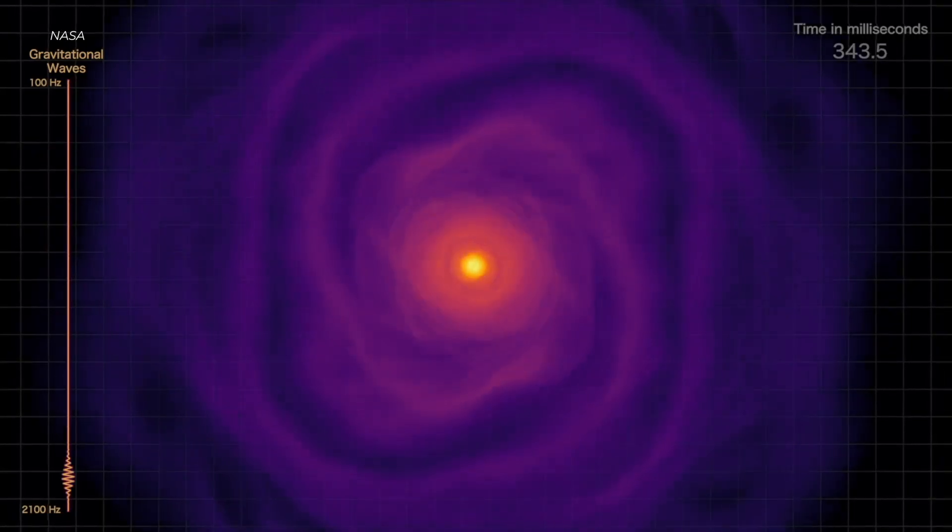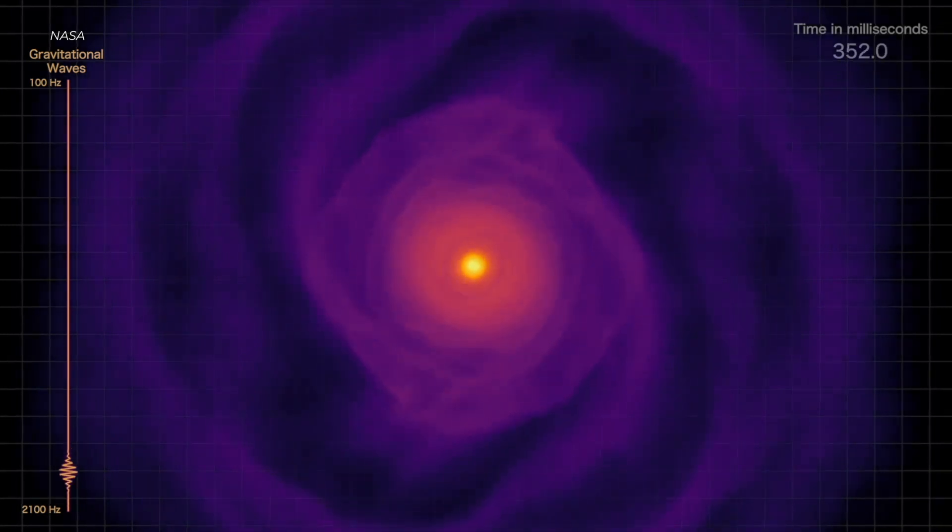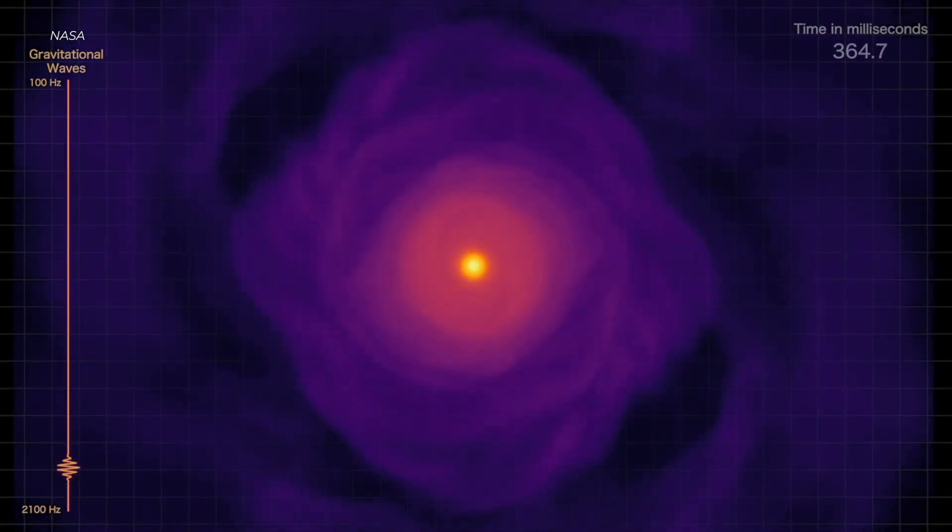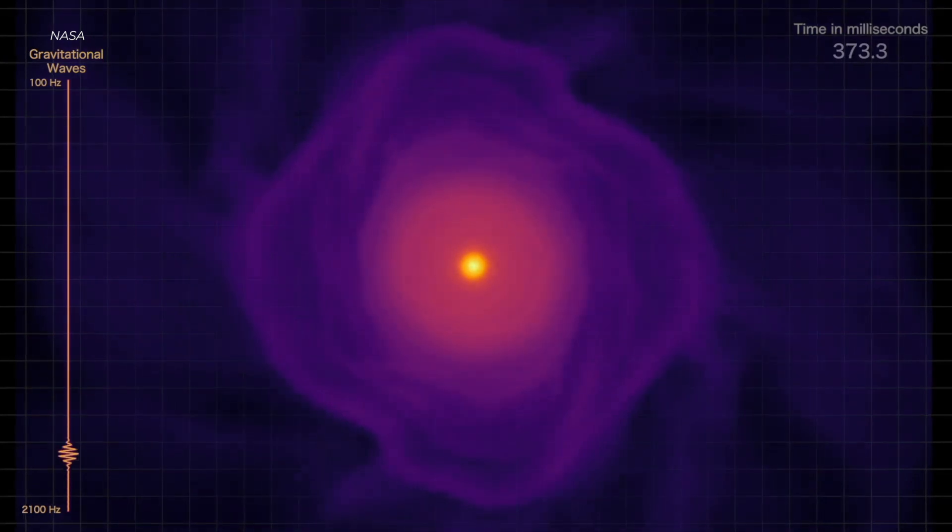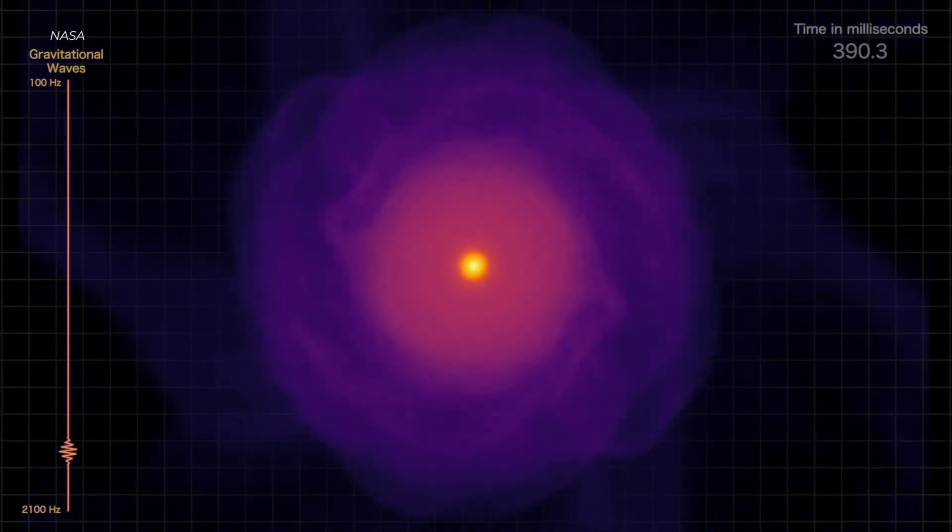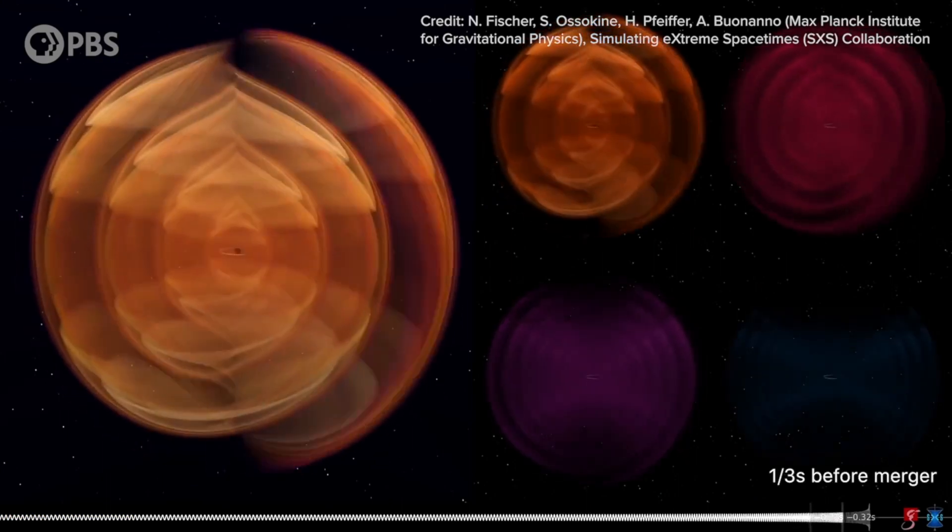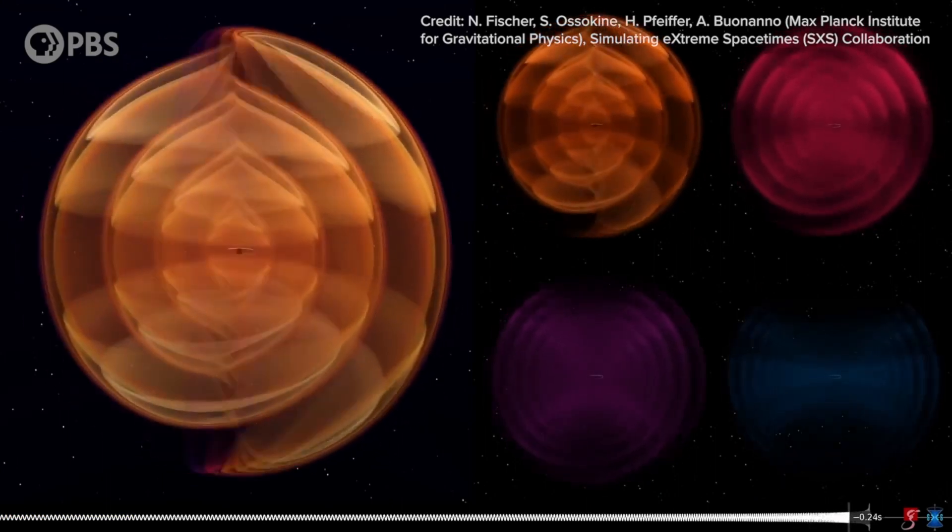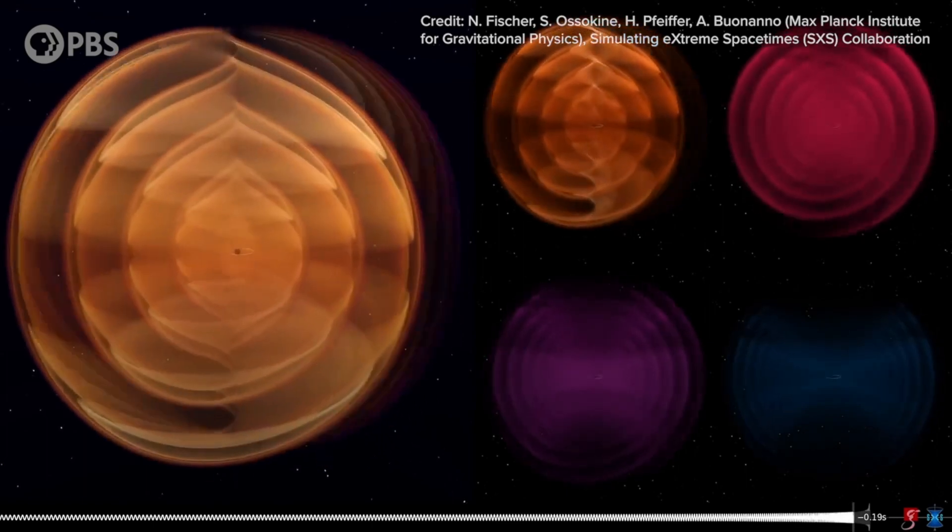So after 15 long years of using the pulsar timing array, they discovered evidence for the gravitational wave background, or GWB, the light year sized waves rippling through the fabric of space-time. And these gigantic waves aren't just happening every so often, they're running through the universe in all directions all the time.